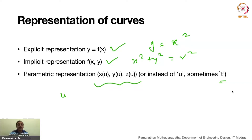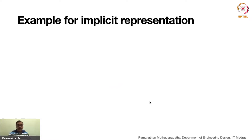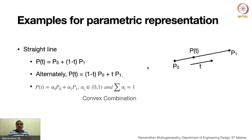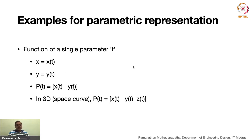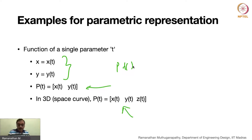We are going more into the details of a parametric representation. In the explicit form of the parametric representation, x is a function of t and y is a function of t. This can be written as a vector: p of t equals x of t and y of t. In 3D space, we represent it similarly as a vector, which is a very important concept.